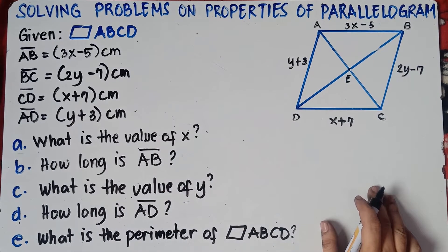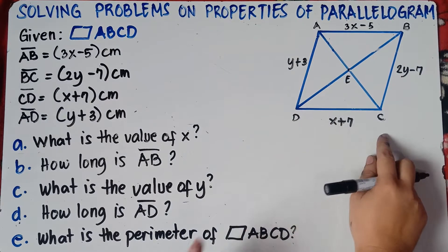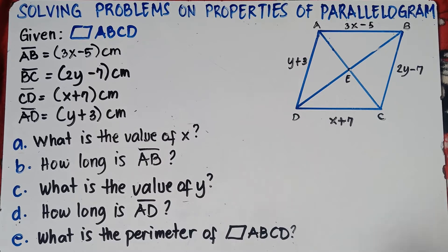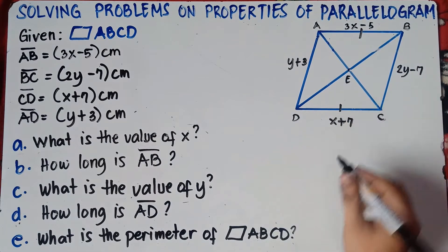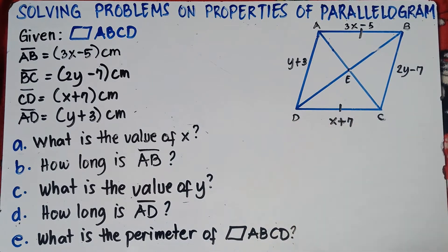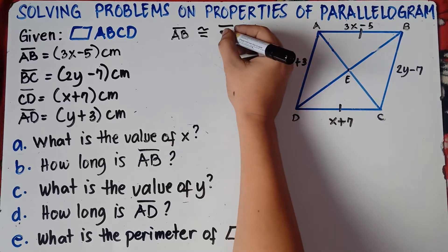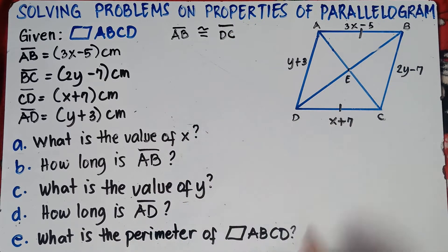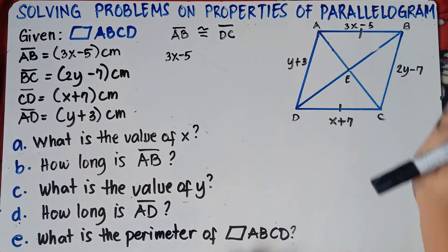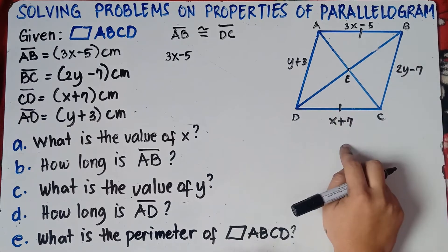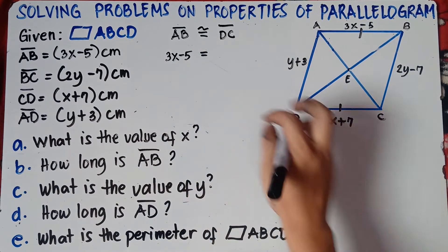First question: what is the value of X? Line segment AB is the same measure as line segment DC. Why? According to the properties of parallelogram, the first property — opposite sides are congruent. So therefore, side AB is congruent to side CD. And since they're congruent, we can equate these equations: 3X minus 5 is equal to X plus 7.